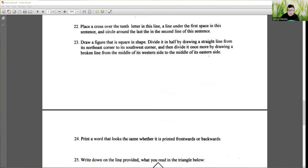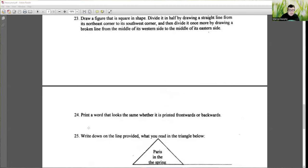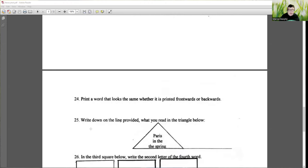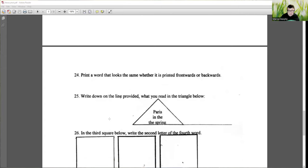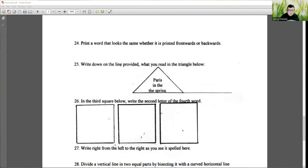Twenty four, print a word that looks the same whether it is printed front or backwards. Again, time. Write down on the list provided what you read in the triangle below, Paris in the spring. In the third square below, write the second letter of the fourth word. Write from the left to the right as you see it spelled here.